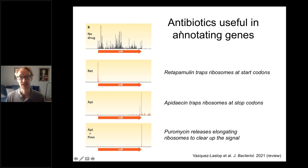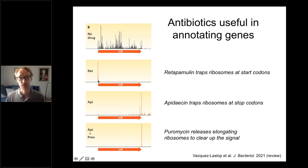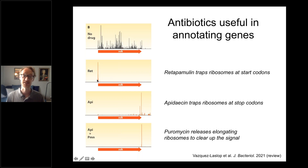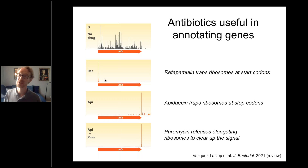An antibiotic called retapamulin binds to ribosomes and traps them at start codons without interfering with elongating ribosomes. The elongating ribosomes run off, and when you do ribosome profiling you see only initiation complexes, telling you where all the start codons are across the transcriptome. It's similar to harringtonin or lactidomycin in eukaryotic systems, but those don't work in bacteria — it's only in the last few years that we've had molecules that work in bacteria. We've also used Onc112 which does the same thing.